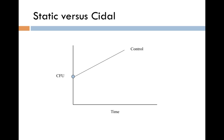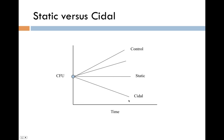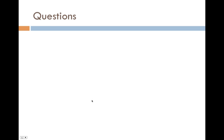If we grew a bug — the y-axis here is colony forming units — and we allowed the bacteria to just grow, those colony forming units would increase with time. If we gave some sort of inhibition, it might slow it down a little bit. If we gave a static drug, that would stop it from growing, but it's still there. Cidal is actually getting rid of the bug. Static versus cidal is a pretty big distinction in what it does.